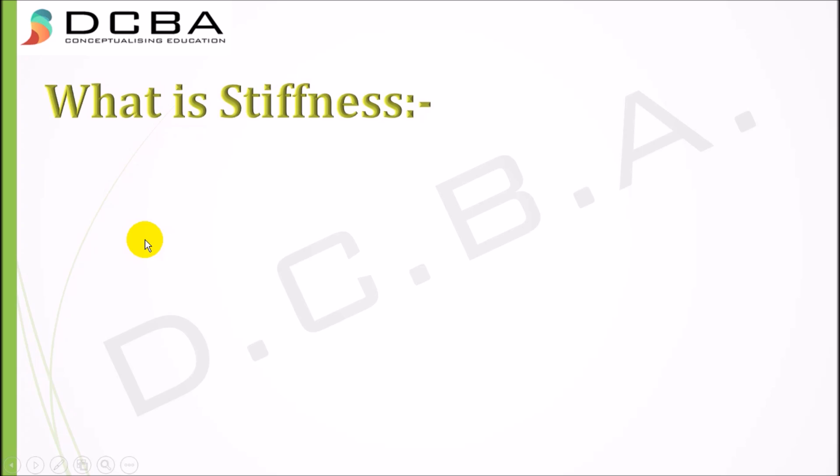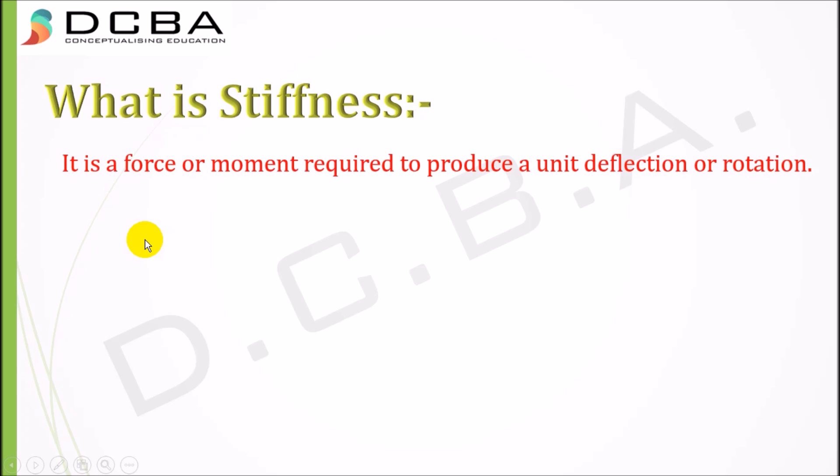So let's get started with what is stiffness. Stiffness is a force or a moment required to produce a unit deflection or rotation. As simple as it sounds, it is a force or moment that produces a unit deflection or a unit rotation. Let us see an example.